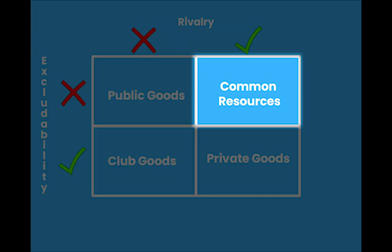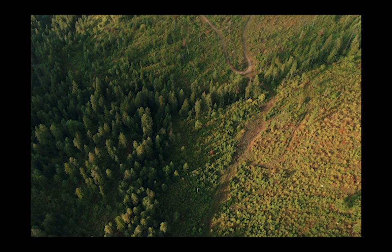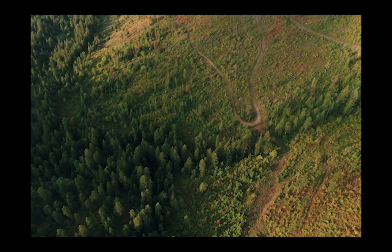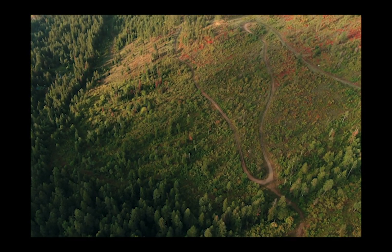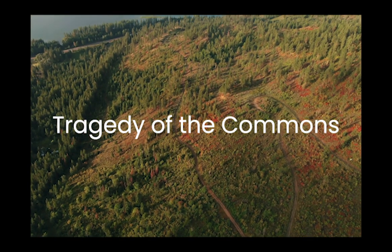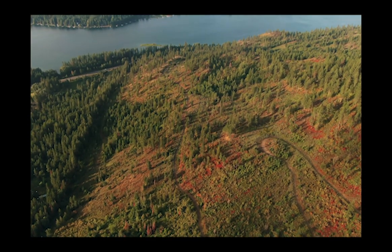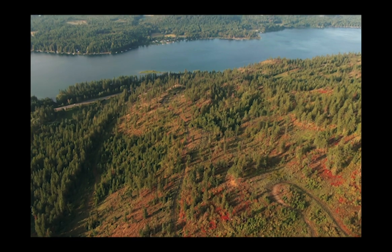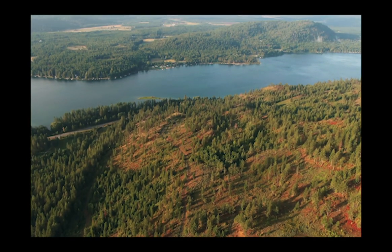Next, we have common resources. Common resources include all goods that are non-excludable but they are rival. This means nobody can be prevented from consuming them but they can only be consumed by one person or one group of people at the same time. This specific combination of attributes often results in overconsumption of these types of goods, which is known as the tragedy of the commons. Some examples of common resources include freshwater fish, forestry, or pastures.